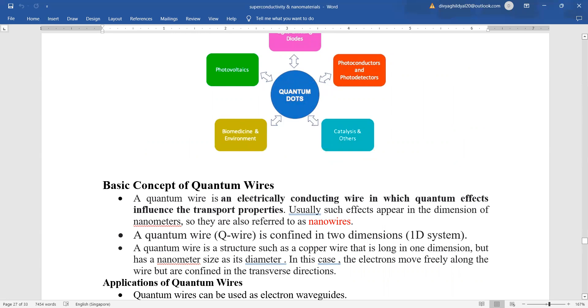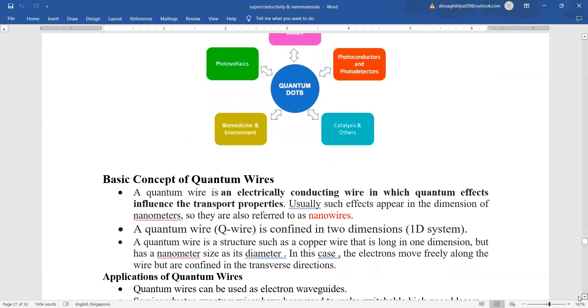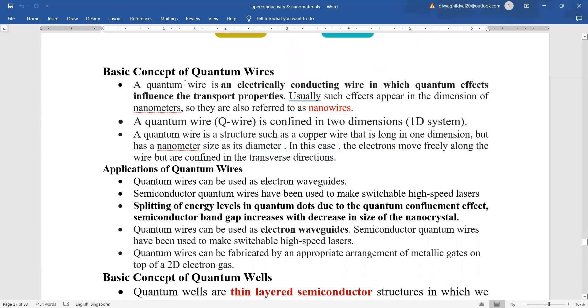Basic concept of quantum wire. Quantum wire is an electrically conducting wire in which quantum effects influence the transport properties. Usually, such effects appear in the dimension of nanometers, so they are also referred to as nanowires. A quantum wire is confined to two dimensions. A quantum wire is a structure such as a copper wire that is long in one dimension but has a nanometer size as its diameter. In this case, the electrons move freely along the wire but are confined in the transverse directions. Quantum wires can be used as electron waveguides.